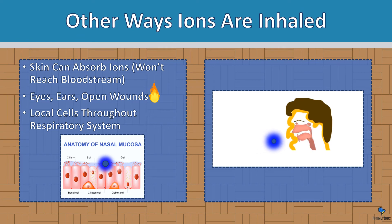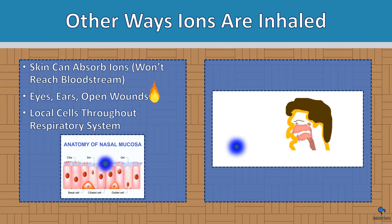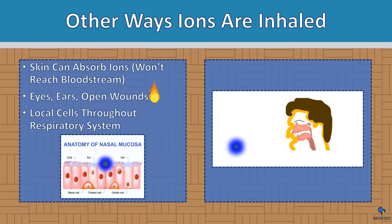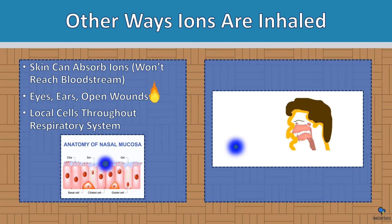Other ways ions are inhaled: our skin can actually absorb air ions, but it won't reach the bloodstream. Eyes, ears, and even open wounds can absorb ions — there are studies where air ionizers were used on wounds and the wounds healed much quicker as a result. Local cells throughout the entire respiratory system can also absorb ions, so as an ion goes inside your nose, it can be taken in there.